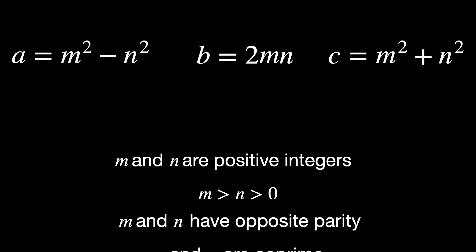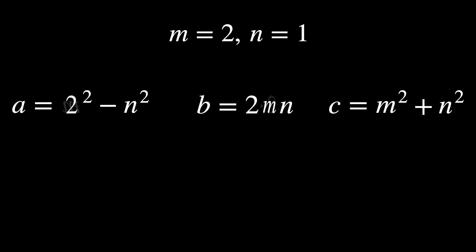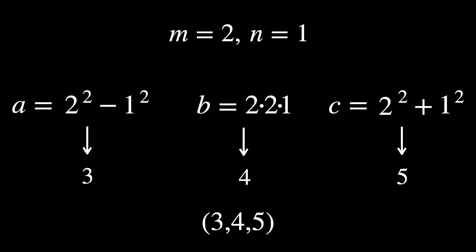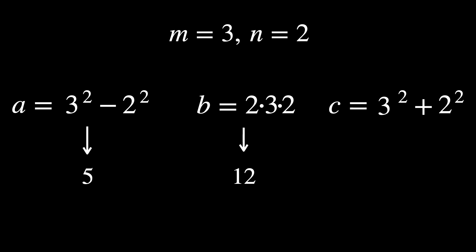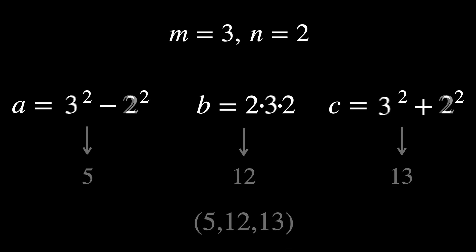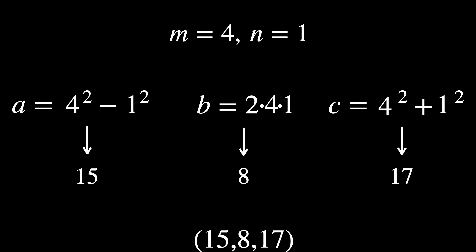By substituting different values of m and n, we can get different examples. When m equals 2 and n equals 1, the result is 3, 4, 5. When m equals 3 and n equals 2, the result is 5, 12, 13. When m equals 4 and n equals 1, the result is 15, 8, 17.